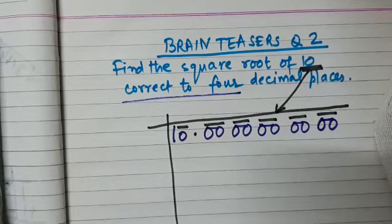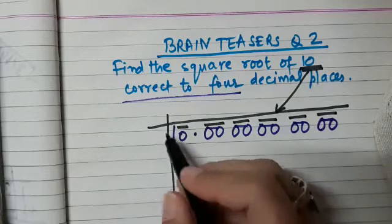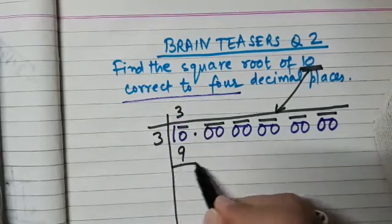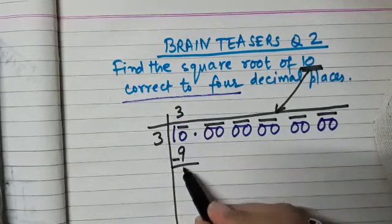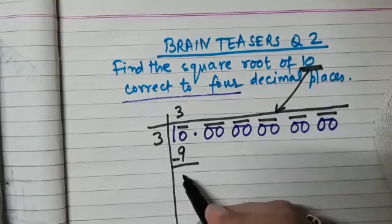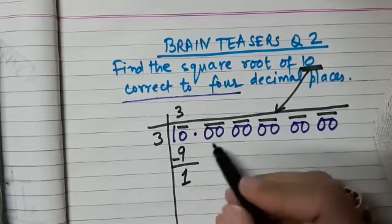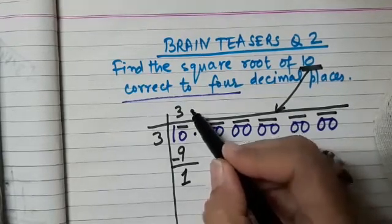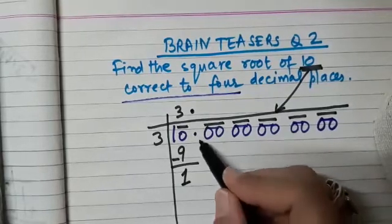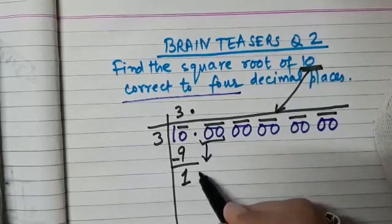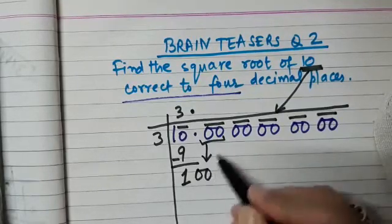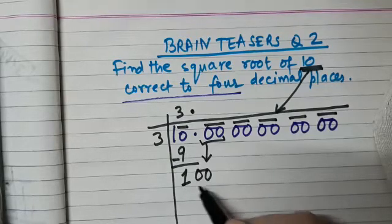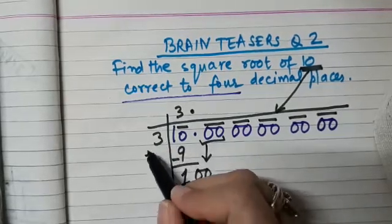Now we start the process of long division. Here we have 10, so we say that three threes are nine, so 10 minus 9 is 1. We see a decimal sign, so we put this decimal in the quotient and bring down the next period, which is a pair of zeros, giving us 100.